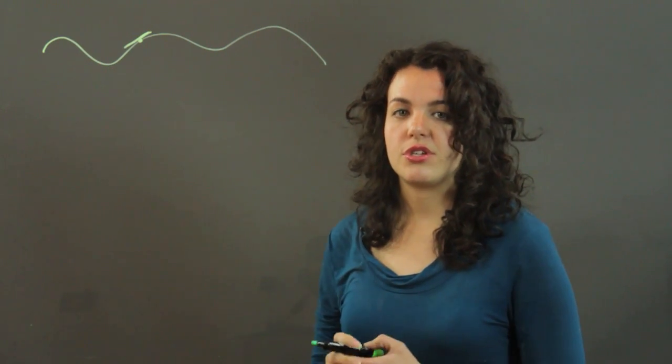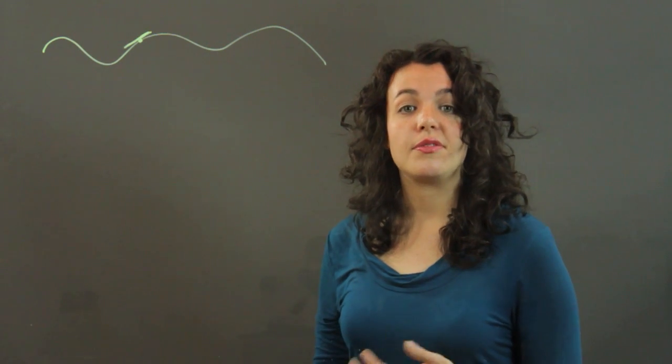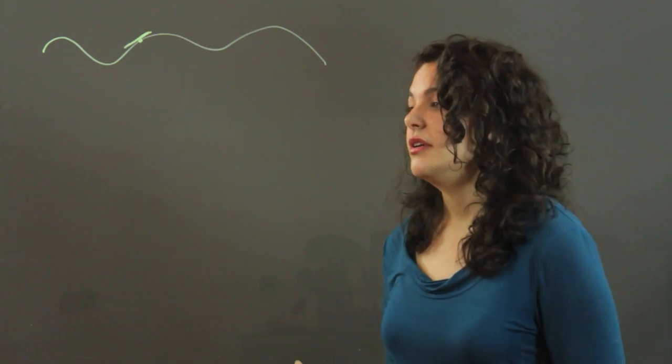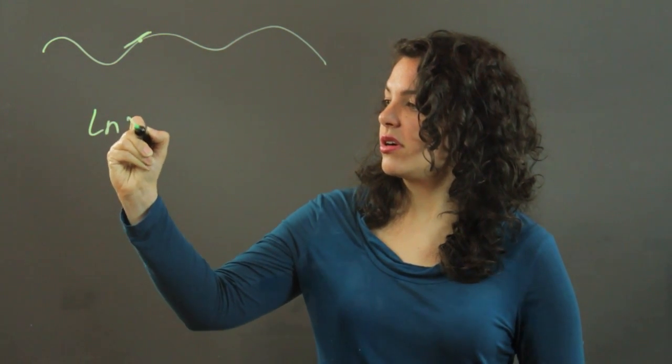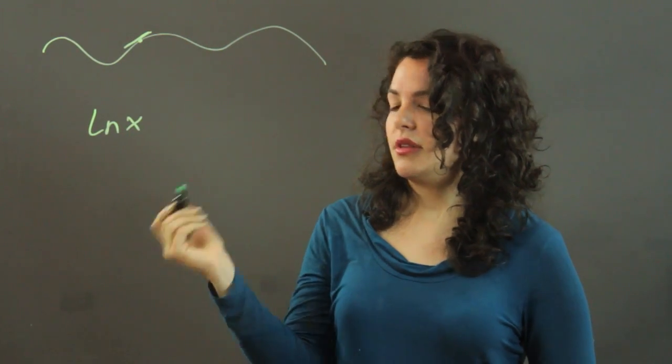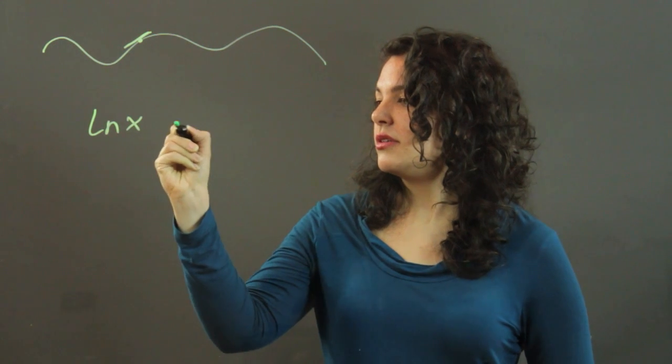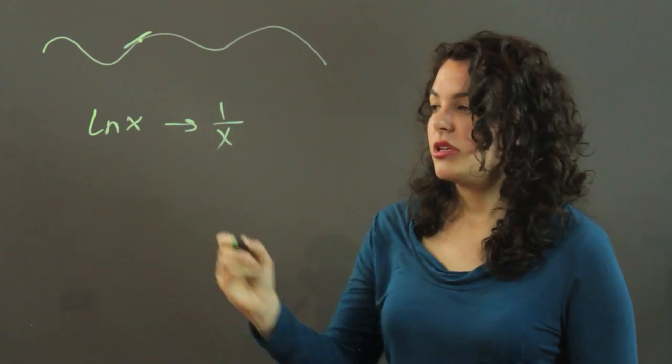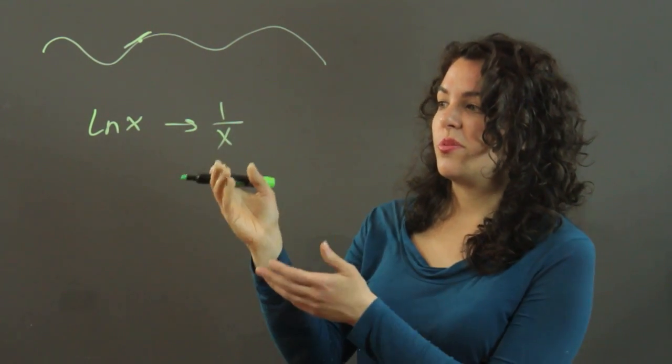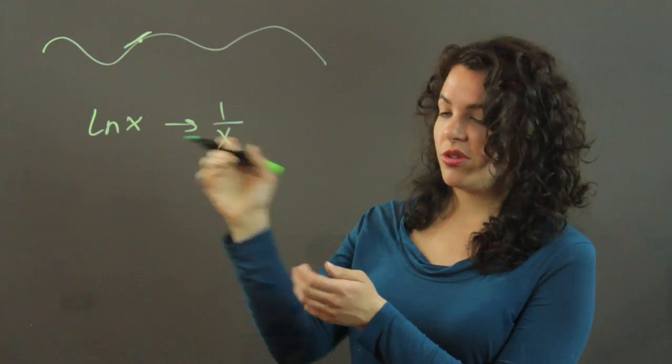So to answer this question, we're just going to take the derivative of a natural log. And if you have the natural log of x, then its derivative is just 1 over x. So this would be the slope of the tangent line to the natural log of x.